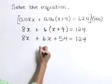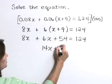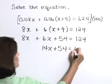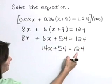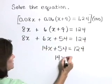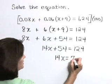Combining like terms gives 14x plus 54 is equal to 124. Subtracting 54 from both sides gives 14x is equal to 70.